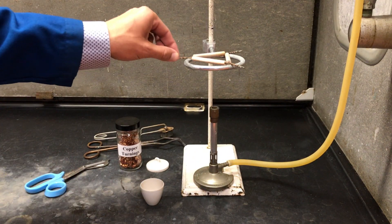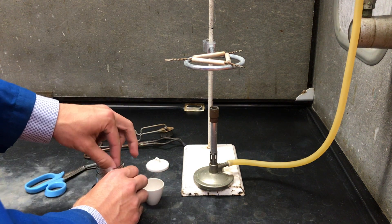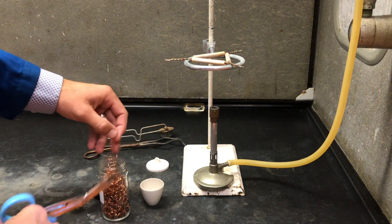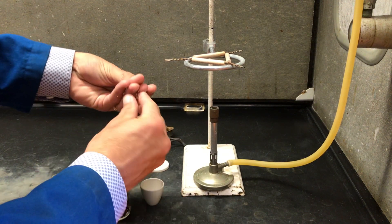In this reaction, we're going to be heating solid copper metal in a crucible, reacting it with gaseous oxygen. Put enough copper metal to cover the bottom of the crucible.